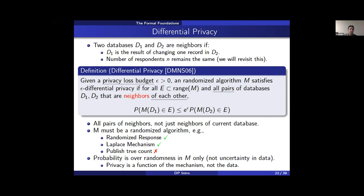The final key point is very important: the probability computation only involves randomness in the mechanism itself — we don't use any probabilities associated with the data. This avoids problems like losing privacy guarantees by misspecifying the data distribution, and enables useful properties like composition, which will be discussed in a later talk.